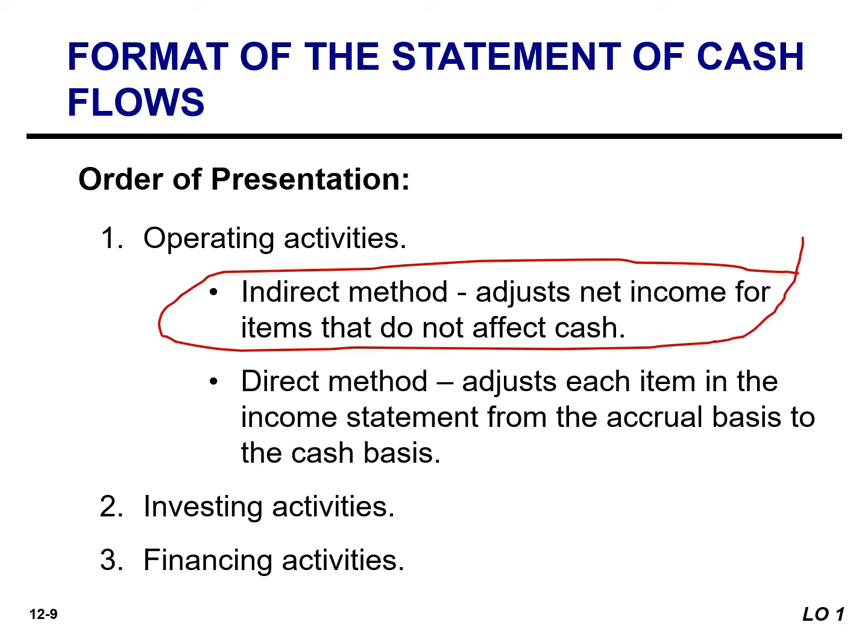The indirect method adjusts net income for items that do not affect cash — most companies use this method. The direct method shows operating cash receipts and payments and is prepared by adjusting each line item on the income statement from the accrual basis to the cash basis. The next learning objective will illustrate the more popular indirect method. We will also discuss the direct method in the appendix, but keep in mind most companies use the indirect method, so most of our time will be spent covering this method.